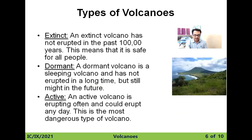The next topic is the types of volcanoes. Volcanoes erupt in three types: extinct, dormant, and active. Extinct volcanoes have not erupted in the past 10,000 years, which means they are safe for people. A dormant volcano is a sleeping volcano that has not erupted in a long time but still might erupt in the future. An active volcano is one that erupts often and could erupt any day — this is the most dangerous type of volcano.